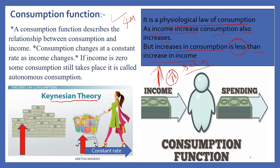When consumption increases less than the increase in income, it leads to savings. Till a particular level of income, consumption may be more than income. But once income is enough to buy almost all needed goods, if your income increases further, consumption increases but less than the increase in income. This is what we call the psychological law of consumption.